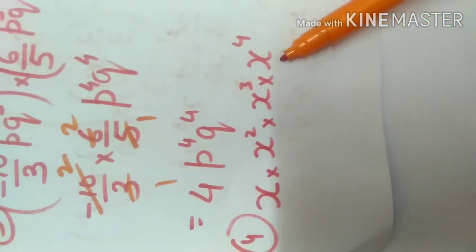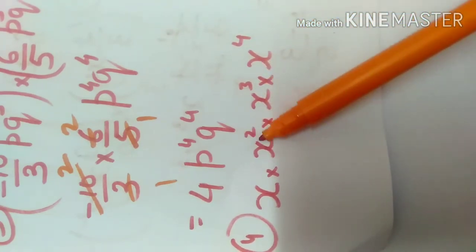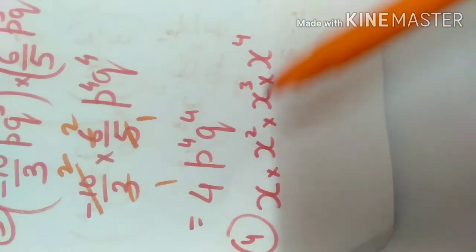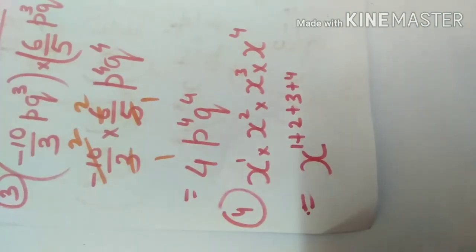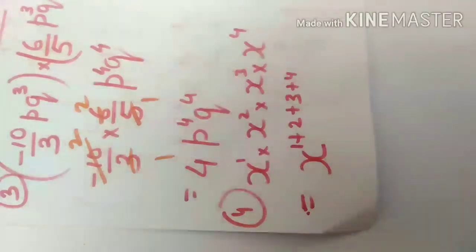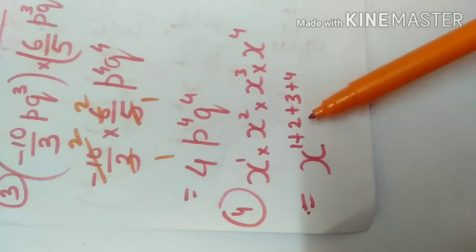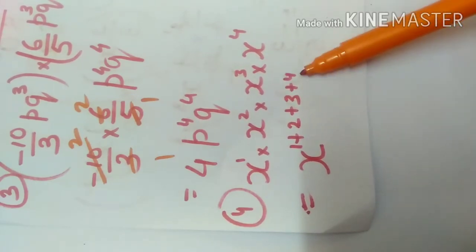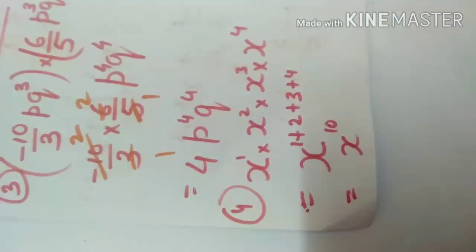Next question: x multiplied to x squared, multiplied to x cubed, multiplied to x to the power 4. All variables are x, so we add all the powers: 1 plus 2 plus 3 plus 4. That is 1 plus 2 is 3, plus 3 is 6, plus 4 is 10. So the answer is x to the power 10. In my next video I will cover the remaining questions. Thank you.